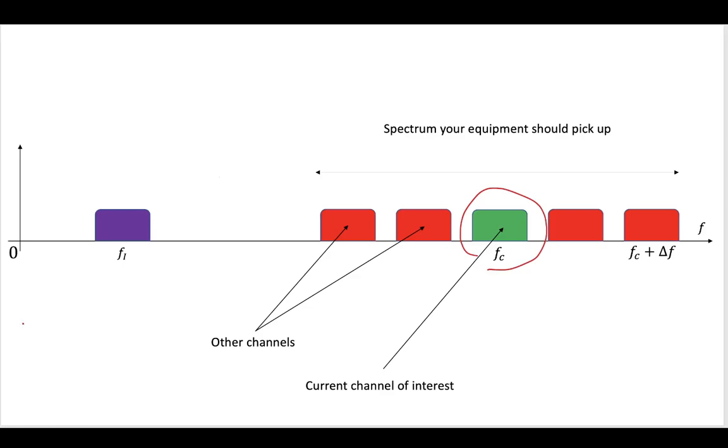So the next idea is that we should come up with a way of taking our channel of interest and putting it down to some intermediate channel. And by doing this, we're going to be able to make filters at this intermediate frequency that work much better than the filters at this high frequency.